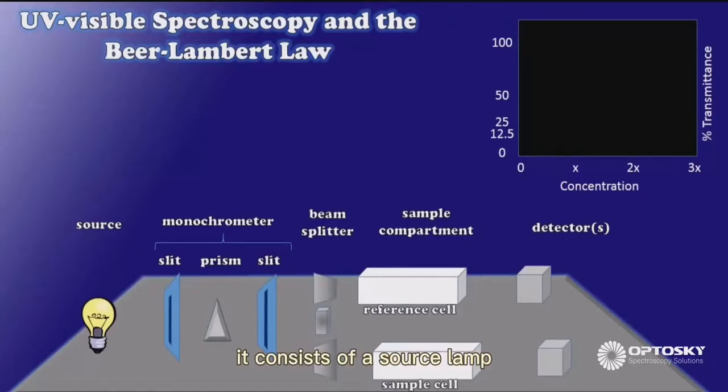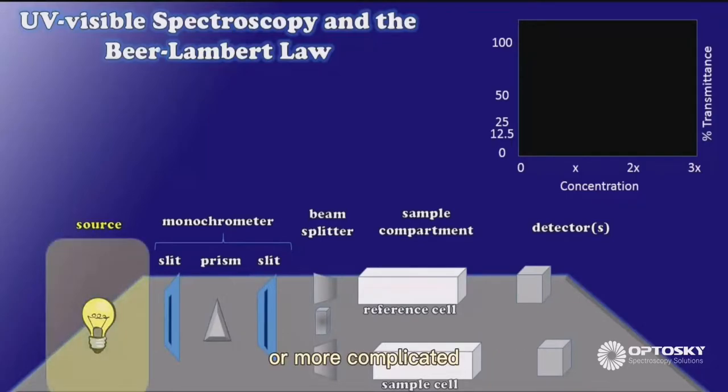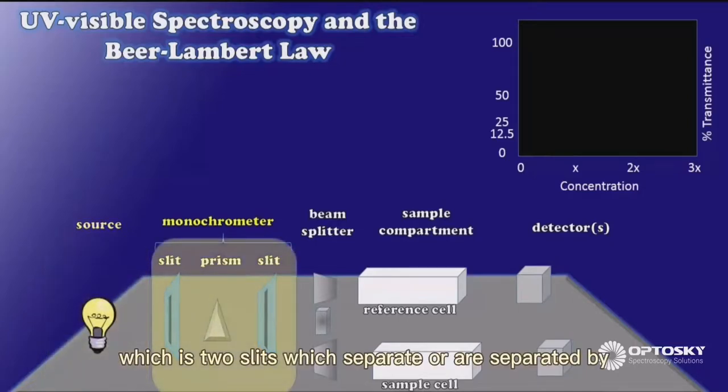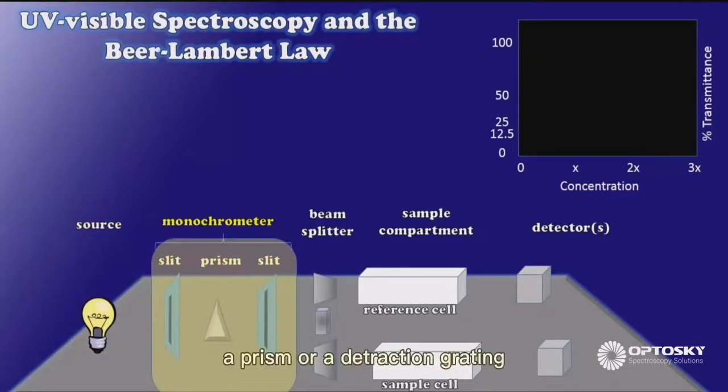It consists of a source lamp, which is something as simple as the headlamp from a motor scooter, or more complicated, like a deuterium lamp or xenon arc lamp. The next device in line is what's known as a monochrometer, which is two slits which are separated by a prism or a diffraction grating.